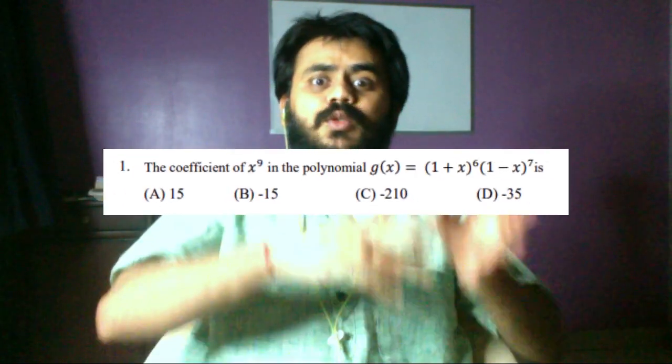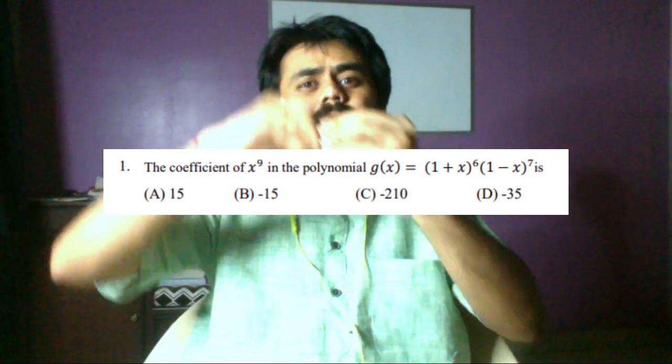The first question type is finding the coefficient of x to the power r — r could be anything — in some binomial or multinomial expression of x. A slight variation of this could be finding the coefficient of the term independent of x in that expression, which could again be some multinomial or binomial expression.